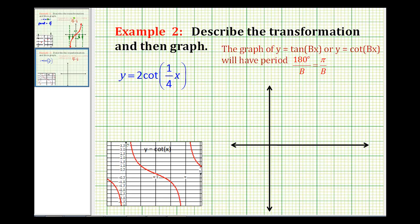Welcome to a second example of describing and graphing a transformation of tangent and cotangent. Here we have y equals two times cotangent of one-fourth x.